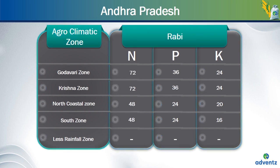If the rice crop is planted in the Rabi season instead, then the requirement changes. For the rice crop planted in the Rabi season in Godavari zone of Andhra Pradesh, the amount of nitrogen needed is 72 kgs per acre, the amount of phosphorus required is 36 kgs per acre and potassium is needed to the amount of 24 kgs per acre. For the rice crop planted in the Rabi season in Krishna zone of Andhra Pradesh, the amount of nitrogen needed is 72 kgs per acre, amount of phosphorus is 36 kgs per acre and potassium is also 24 kgs per acre. The NPK requirements in the Rabi season for Godavari zone crops and Krishna zone crops are the same.